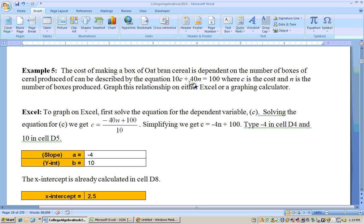So you would solve it for C. So taking the 40N to the other side, that makes it minus 40N, and then divide through by 10. Breaking this up into its parts here, negative 40 divided by 10 is negative 4, and 100 divided by 10 is actually 10 here.